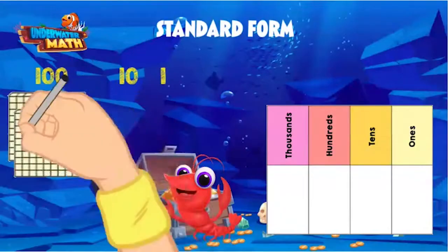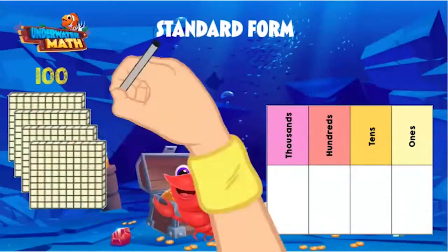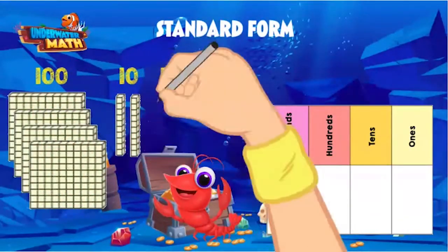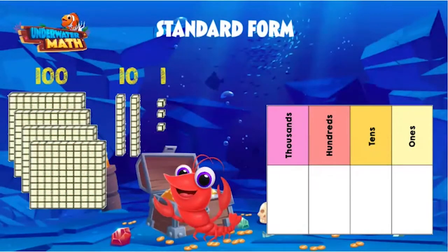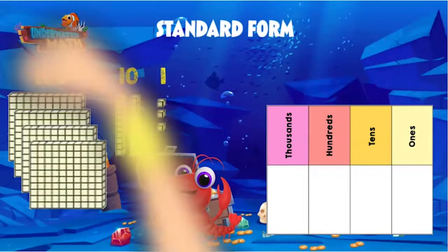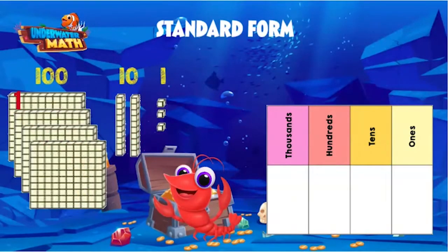The total amount of money in dollars is represented by the base 10 blocks. Let's see how much money in gold we found. How many hundreds do we have? 100, 200, 300, 400.